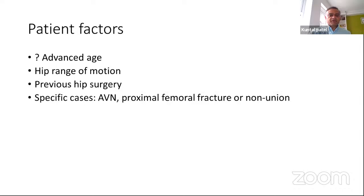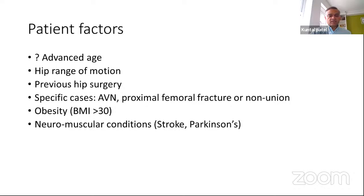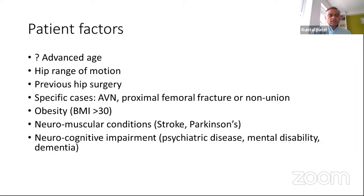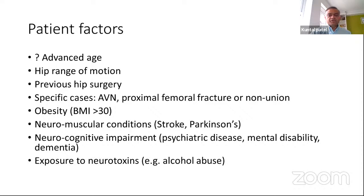Previous hip surgery, including cases like previous femoral fracture fixation, non-union, and AVN, are contributing factors. High BMI over 30 is a definite contributing factor for instability. Neuromuscular disorders such as stroke, Parkinson's, and epilepsy are attributed to dislocation. Mental health issues, dementia, and lack of compliance can cause dislocation, as can alcohol abuse, substance abuse, and exposure to neurotoxins, which impair judgment and hence contribute to instability.